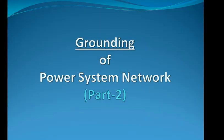In part 1 of the grounding system video, I discussed the two types of grounding systems in power system networks: neutral grounding and equipment grounding. I also discussed the disadvantages of an ungrounded system and the advantages of a grounded system. In this video, I will discuss the different methods of grounding in detail, and finally we will see practical examples for generator neutral grounding and transformer neutral grounding systems used in our power projects.